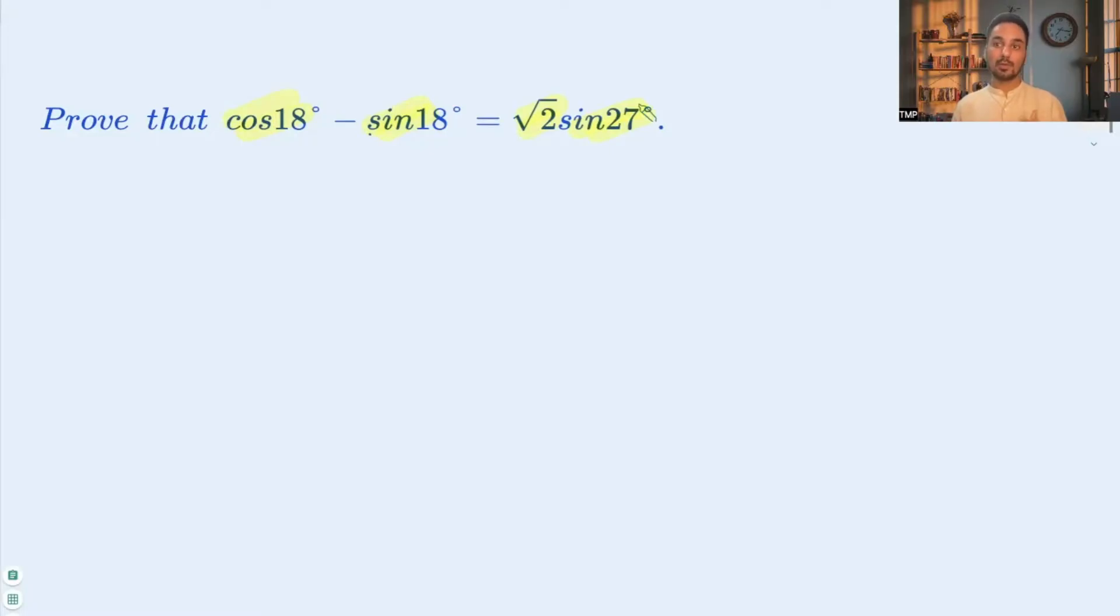In order to solve this question we will use some of the compound angle formulas. Here the right hand side is equal to square root 2 times sin 27 degrees. We can write 27 degrees as 45 degrees minus 18 degrees.